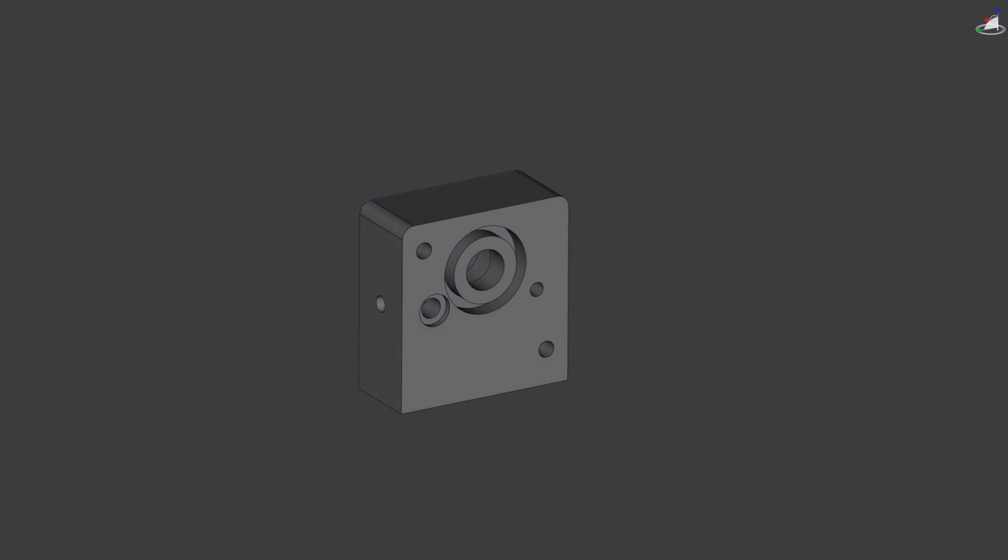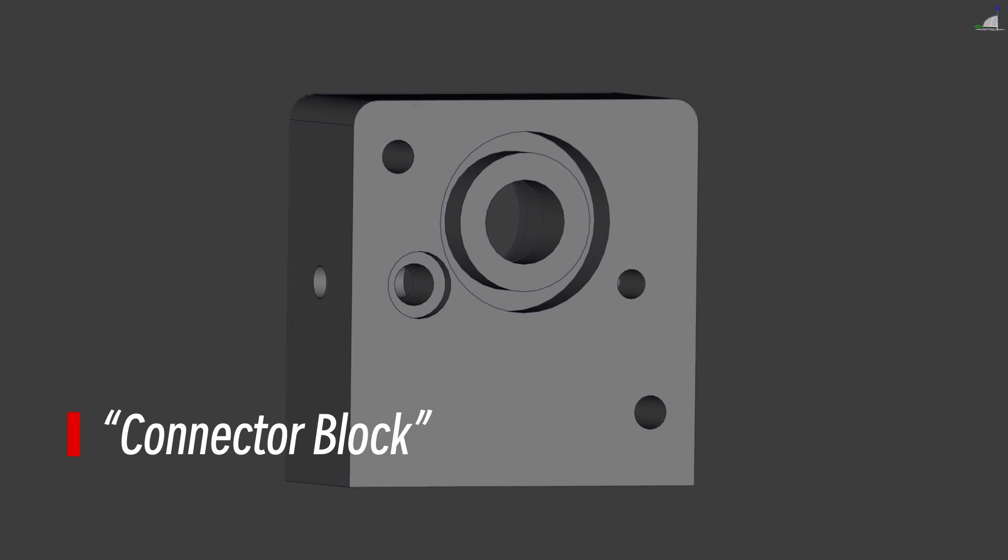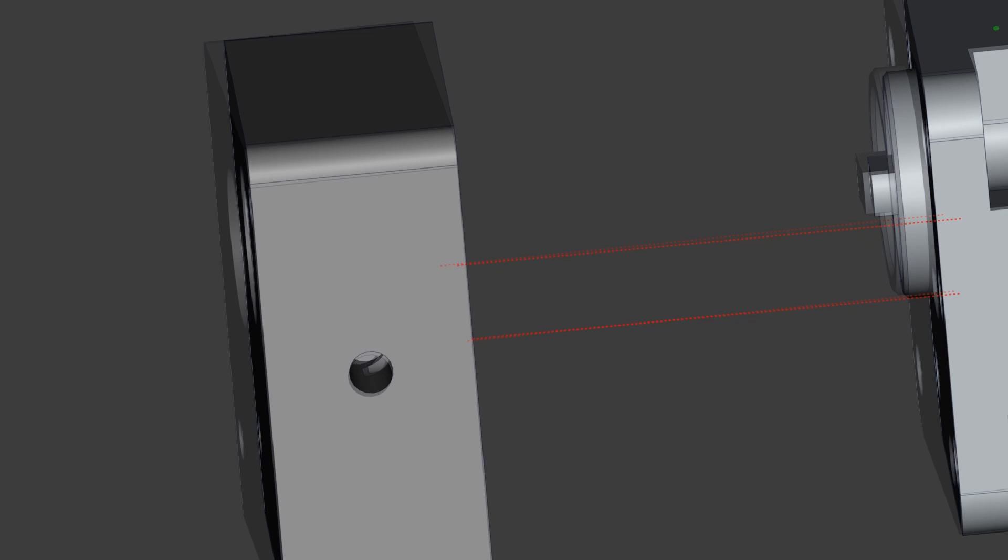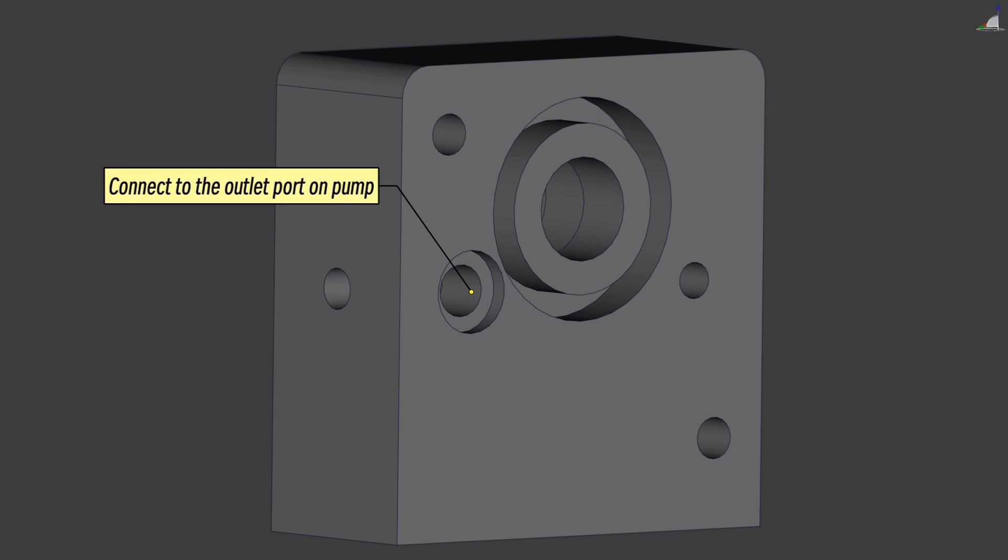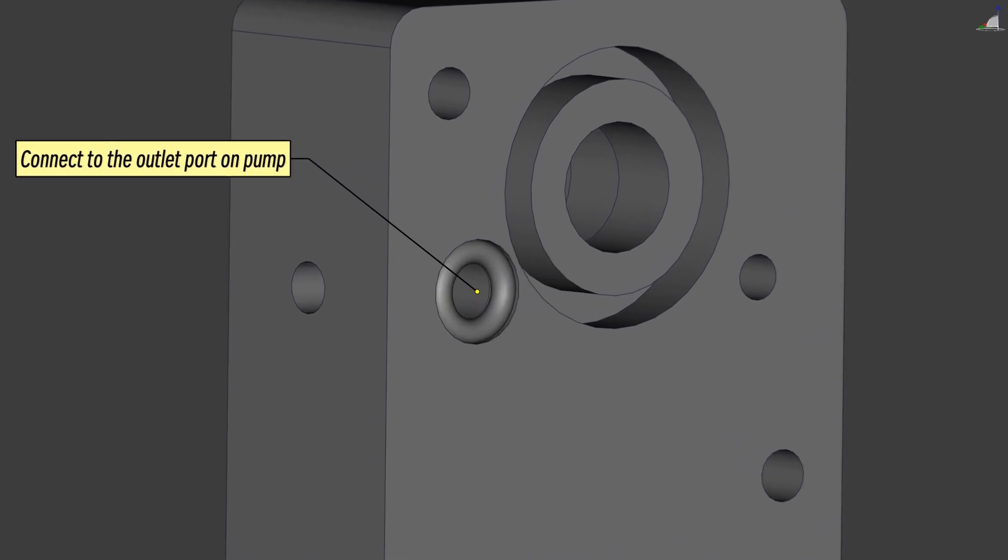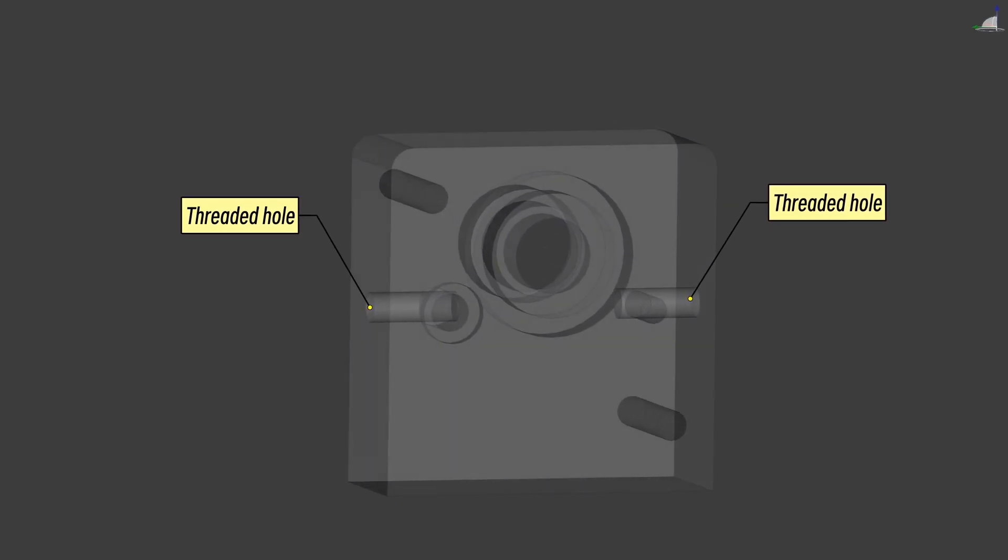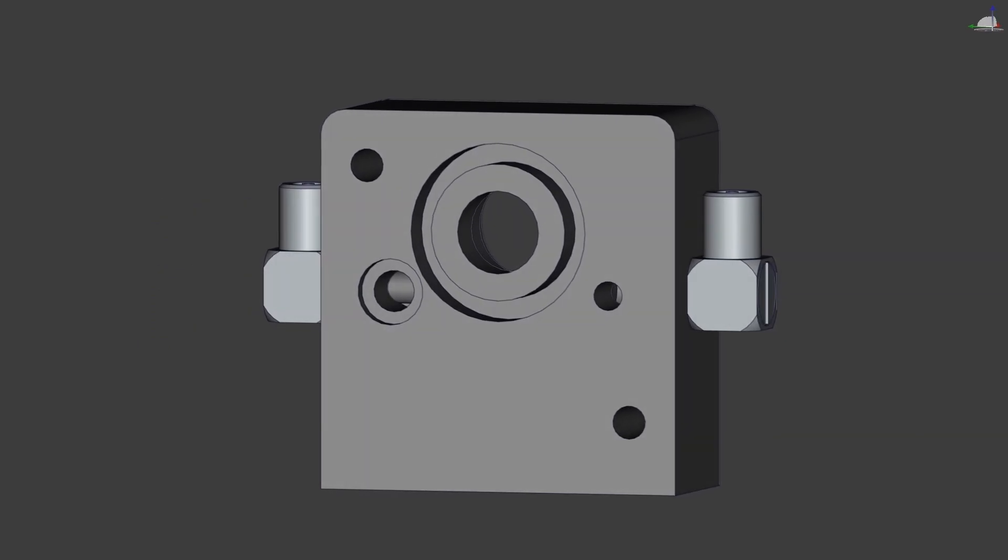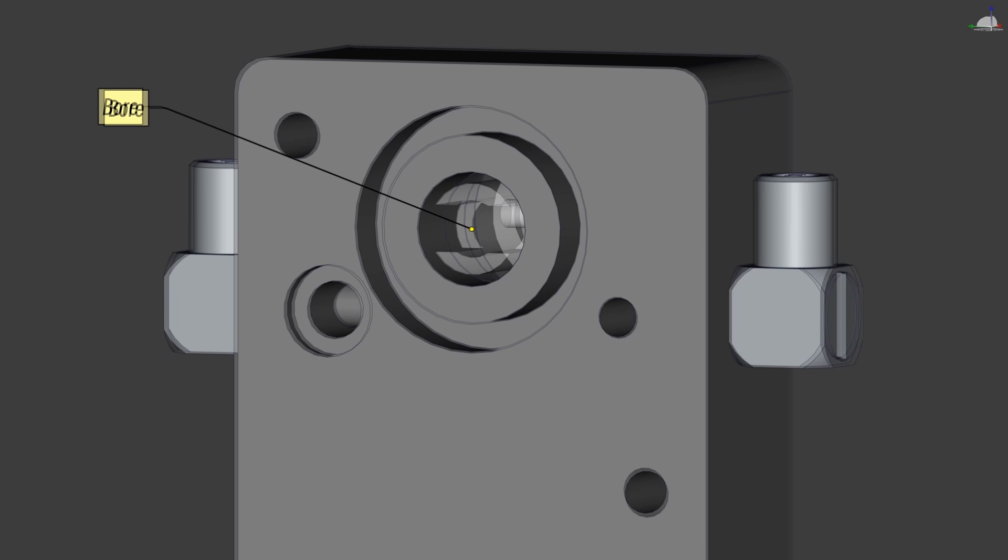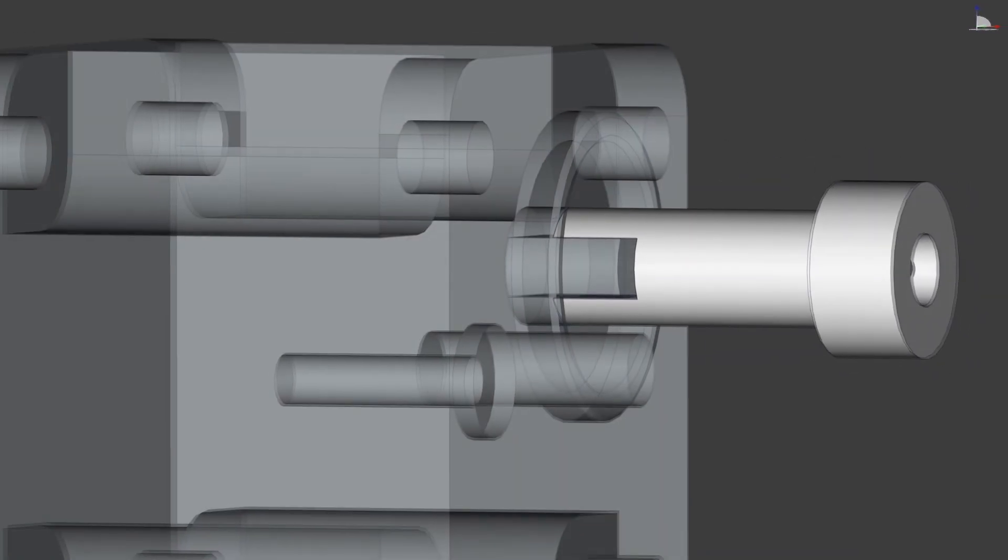To solve these, I designed this part, which I call the connector block. The block has two holes on its end face that connect to the pump's inlet and outlet ports. The hole connecting to the pump's outlet port also has a stepped surface for an O-ring. These two holes are connected to two threaded holes on the side, where quick connect fittings can be installed to connect to the external lines. The bore beside is designed to hold a specially designed coupling. One end of the coupling has a slot to hold the pump's flat shaft, driving it to rotate together.